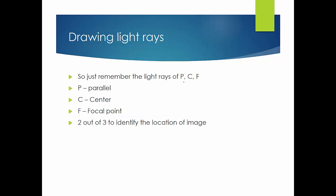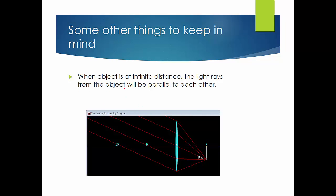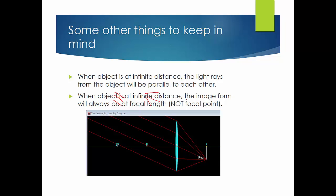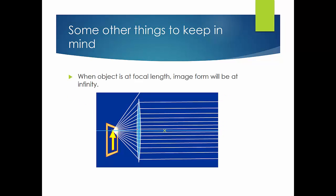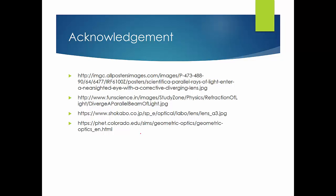Remember the three light rays as P, C, F — parallel, center, and focal point. If you only want to identify the image location, you just need two out of three. Additionally, when an object is at an infinite distance, its light rays are parallel to each other and the image forms at the focal length. Conversely, when the object is at the focal length, the image forms at infinity because the refracted light rays are parallel. That's the end of how to draw a lens ray diagram.